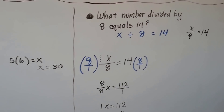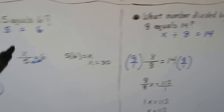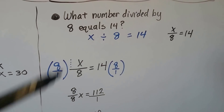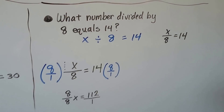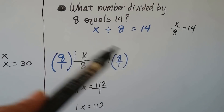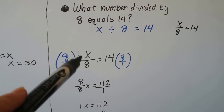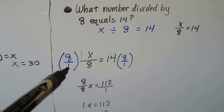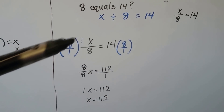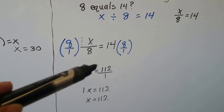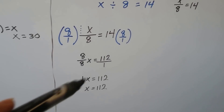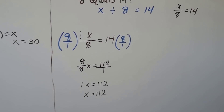What number divided by 8 equals 14? Same method, just slightly bigger numbers. x divided by 8 equals 14, written as x over 8 equals 14. Multiply both sides by 8 over 1 as the reciprocal. We get 8 over 8 times x, and 14 times 8 on the calculator is 112. So x equals 112.